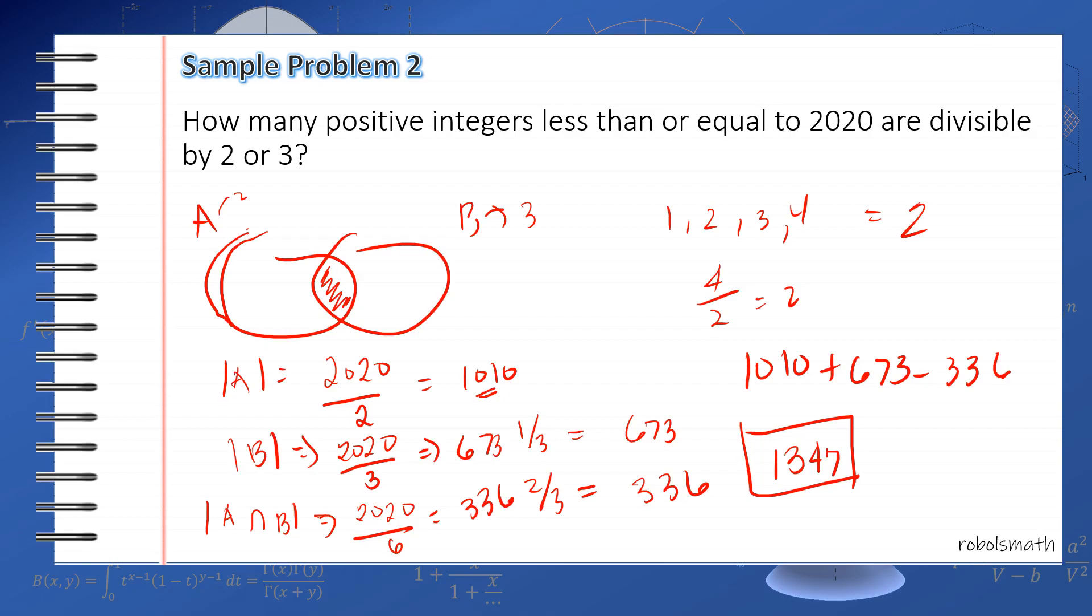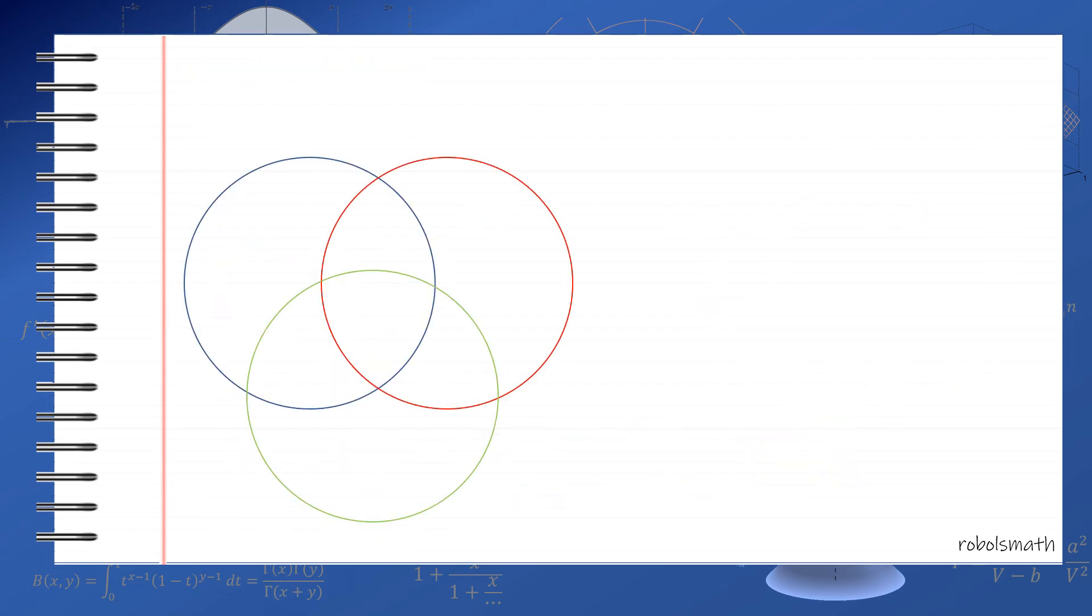Let's level up and proceed to a set containing 3 variables or 3 sets. Earlier we had two, now we have three circles. Let's say the blue set is called A, then the red is B, and then the last one is C. If we want to know the cardinality of the union of all three, we add A, we add B, we add C. But remember, if you add them, you double count this area, this area, and this area.